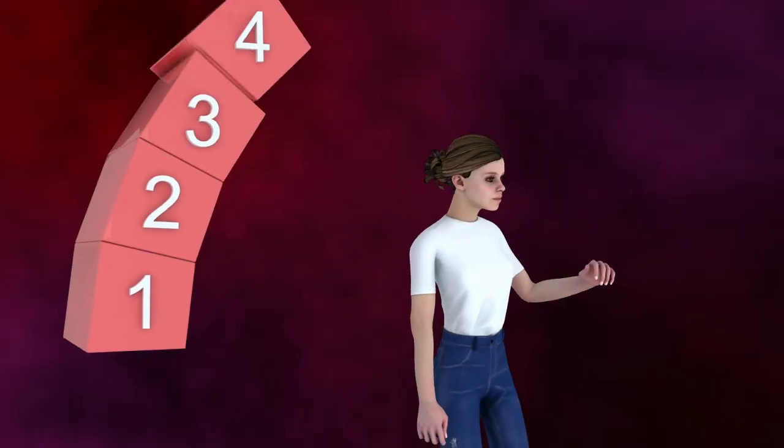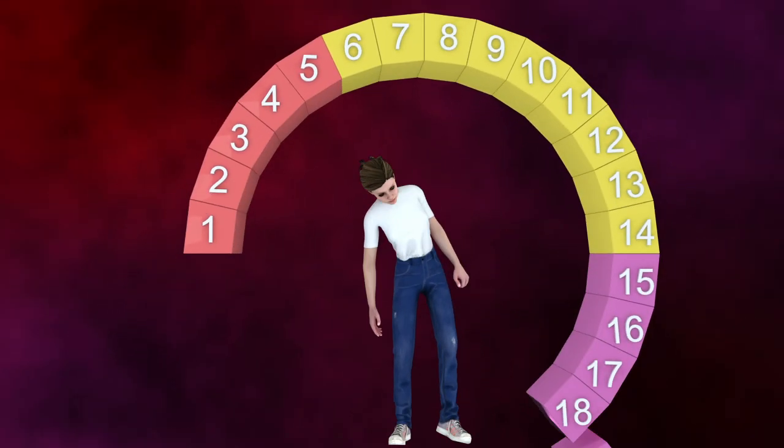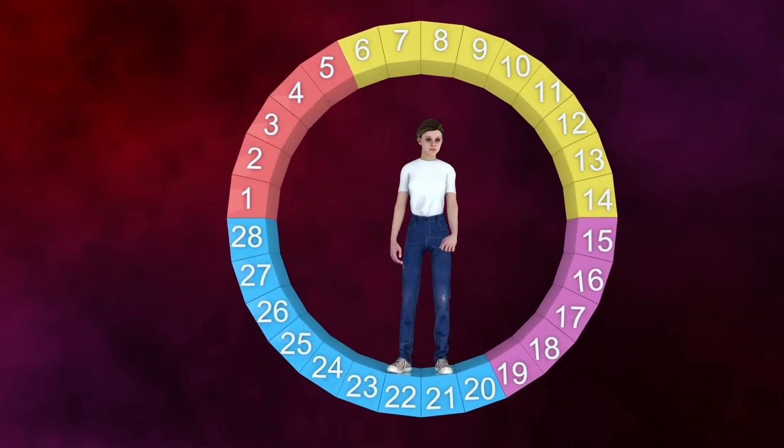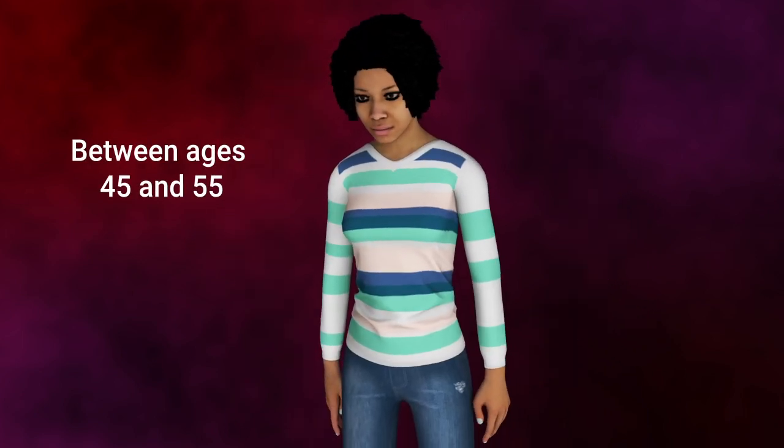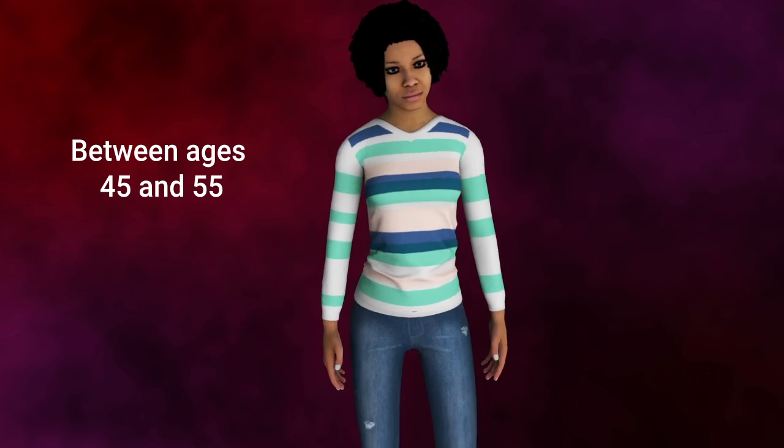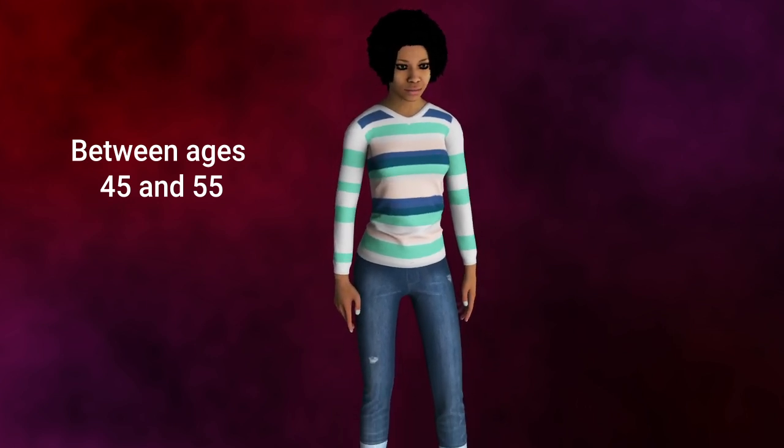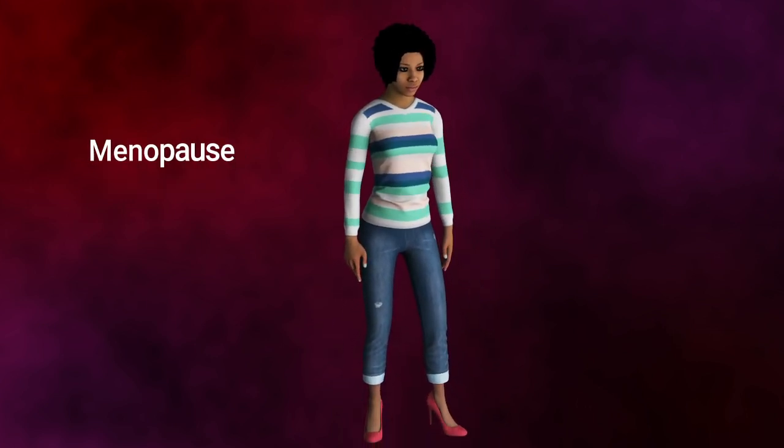This cycle repeats every month, keeping your reproductive system healthy and ready. Eventually, between ages 45 and 55, menstruation stops, marking the end of the reproductive phase. This is called menopause.